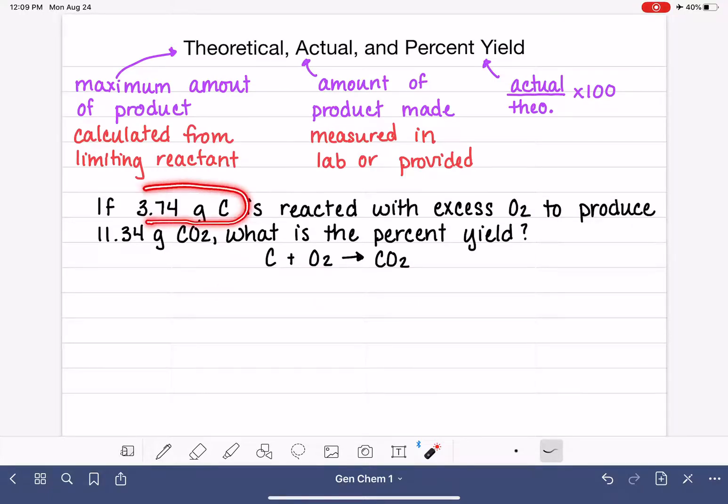In this particular problem, we're given a quantity of the reactant carbon, we're given some information about the reactant O2, and we're also given information about our product CO2. So let's take all of these numbers and just kind of write them underneath each one of the chemicals in the equation, so we have it for quick reference. The problem tells us that we have 3.74 grams of carbon. It tells us that we have excess O2. We'll talk about what that means in a second. And the problem tells us 11.34 grams of CO2.